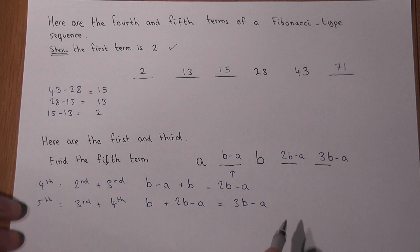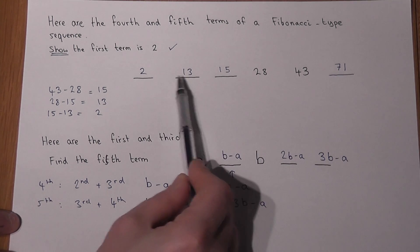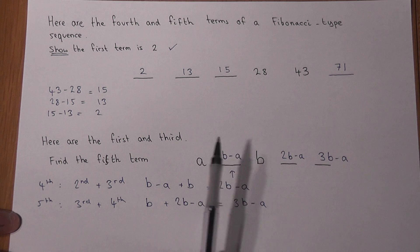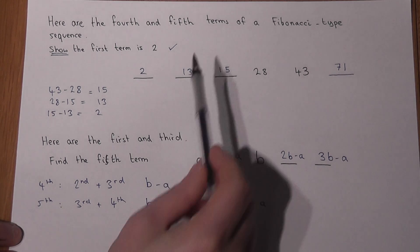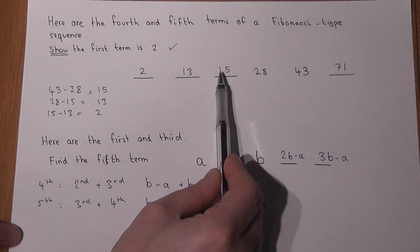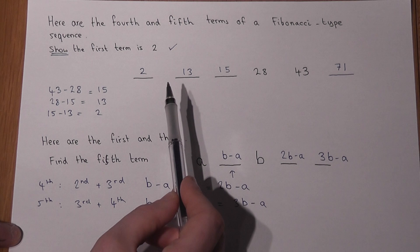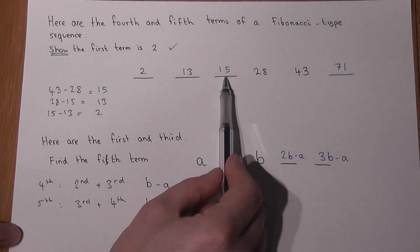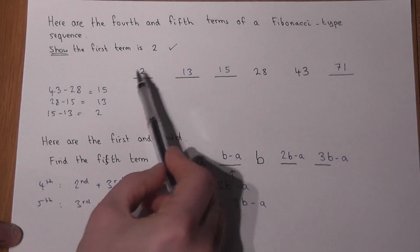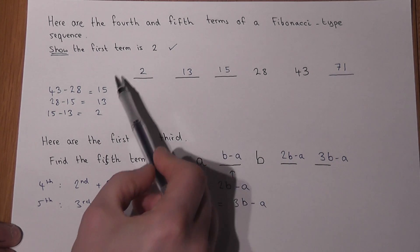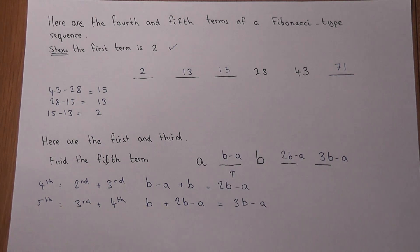So to summarize, if we know two terms, to find the next term we add those two terms together. But conversely, if I know, for example, the second and third term, to find the first term I'll do third take away second. Or if I know the third and the first, to find the second I can do third take away first. And that is the pattern which underlines Fibonacci-type sequences.